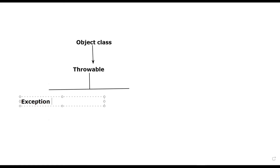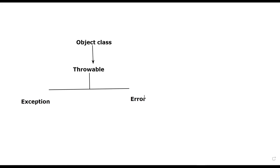This Throwable class is parent of two other classes: Exception and Error. So the hierarchy is: Exception and Error are children of Throwable, and Throwable is a child of Object class. Any class you create in Java has one super parent called Object class. Exception has the parent Throwable, and Error also has the same parent. So Exception and Error can inherit properties from the Throwable class. This is the history of exceptions.